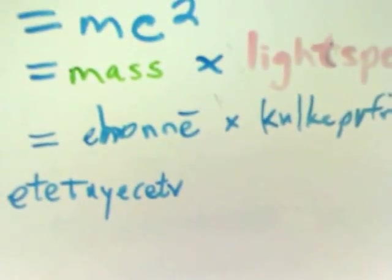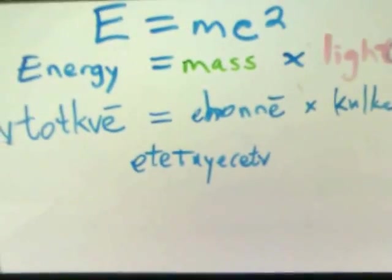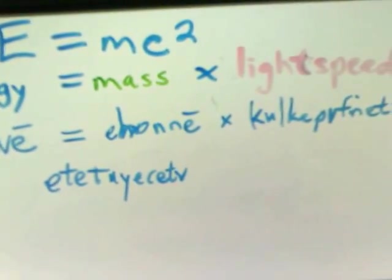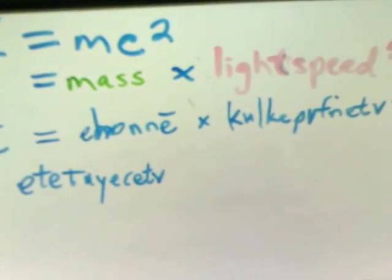So kukki pafnita is the speed of light times itself, which is squared. So the shortest translation would be something like this: Atotki, etiyachita, enhoni, kukki pafnita.